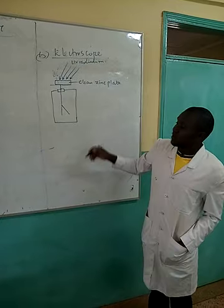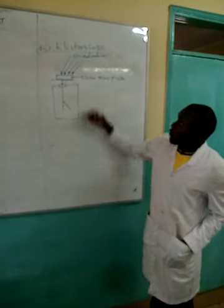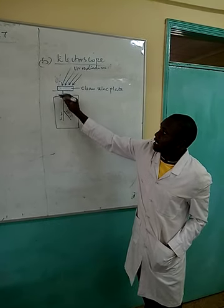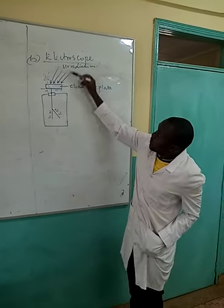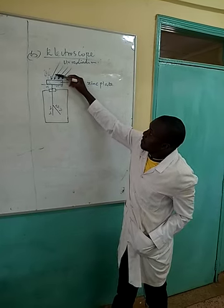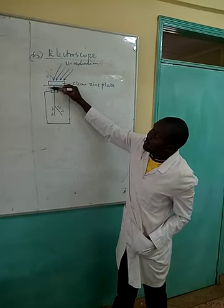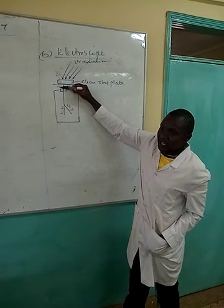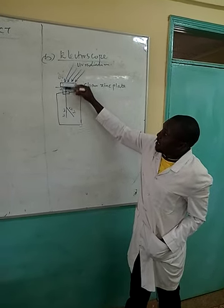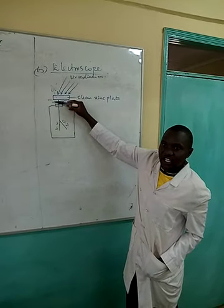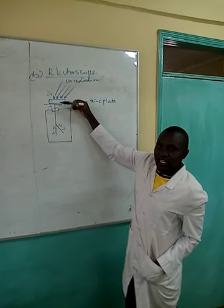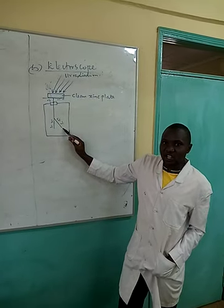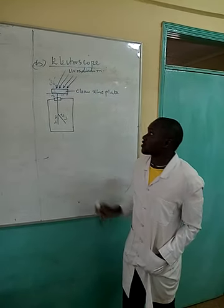What about a positively charged electroscope? When the electroscope is positively charged — meaning the leaf, the plate, and the cap are positively charged — UV radiation emits electrons. These electrons will be attracted by the positive charges on the cap. When they are attracted, it will cause neutralization, meaning there will be no net increase or decrease in charge. Therefore, there will be no observation on the leaf and the plate of the electroscope.